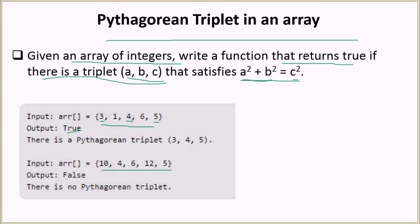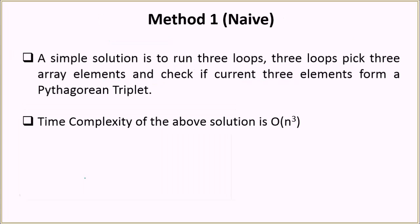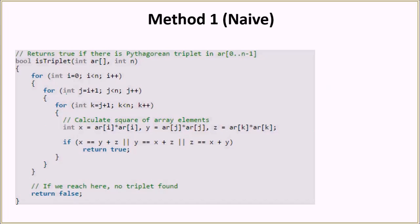The first method is the naive method, which runs three nested loops. Each loop picks one element, and inside the third loop we check if the three picked elements form a Pythagorean triplet. If they do, we return true; otherwise we return false. Because we have three nested loops, the time complexity of this solution is O(n³).